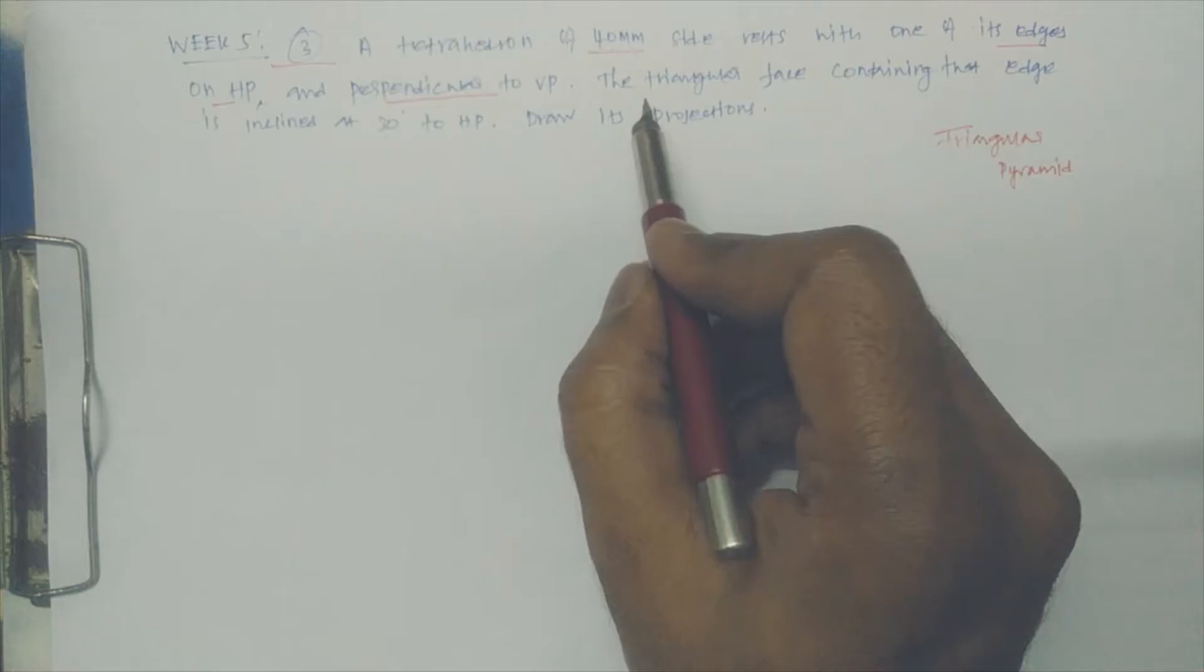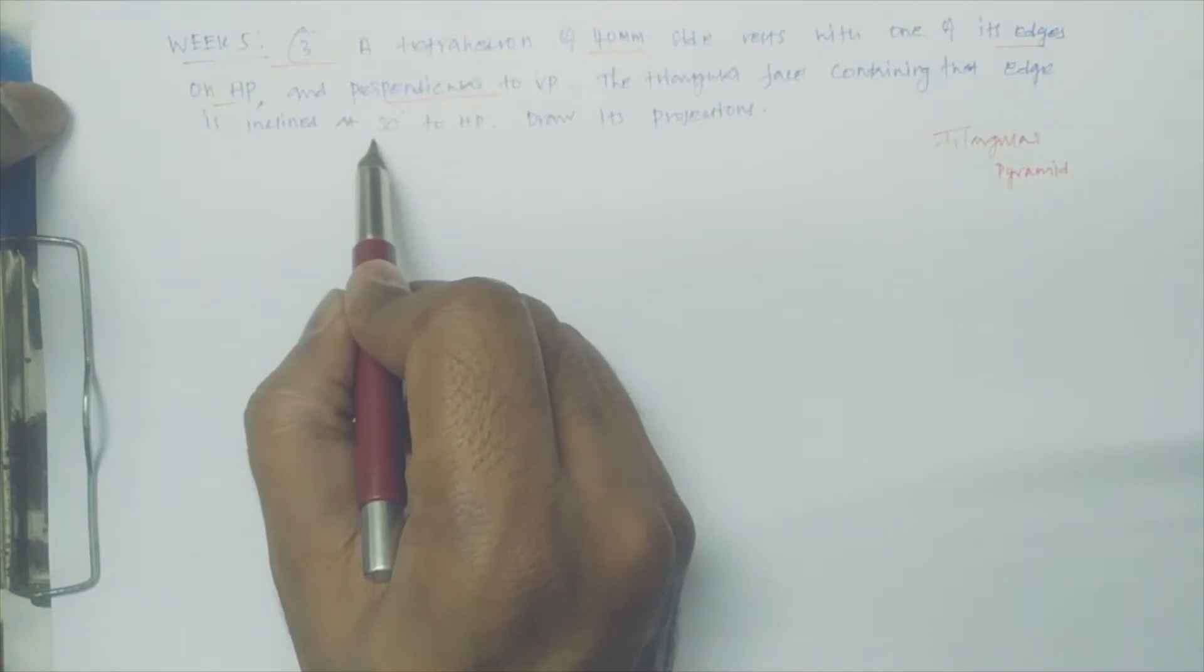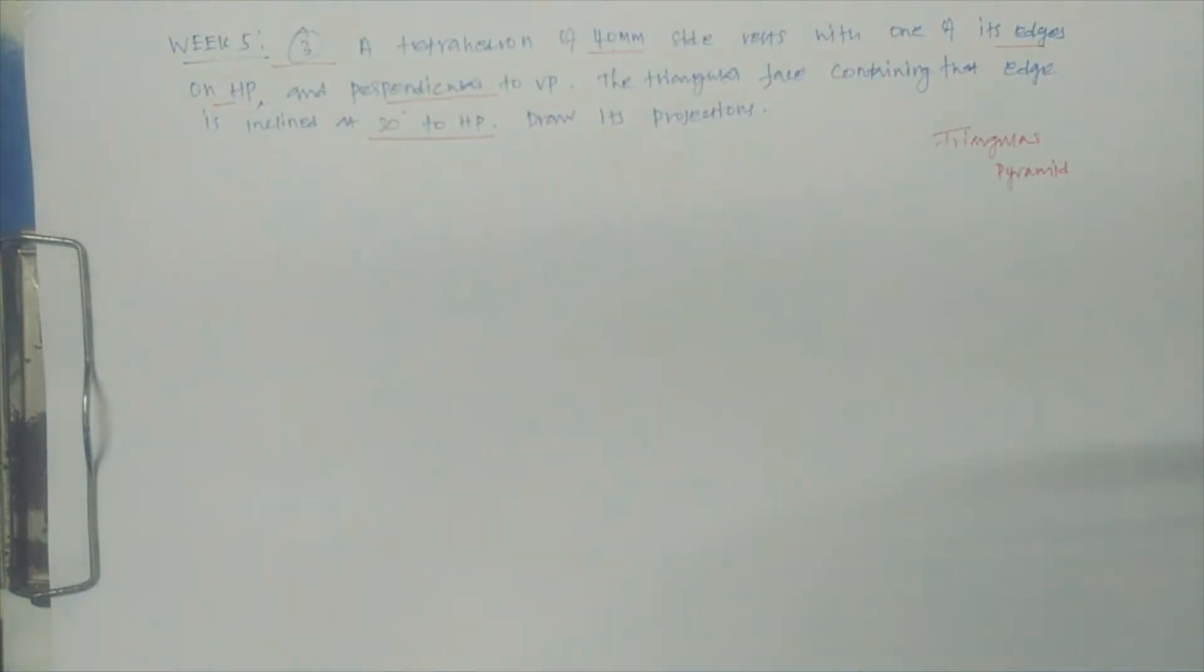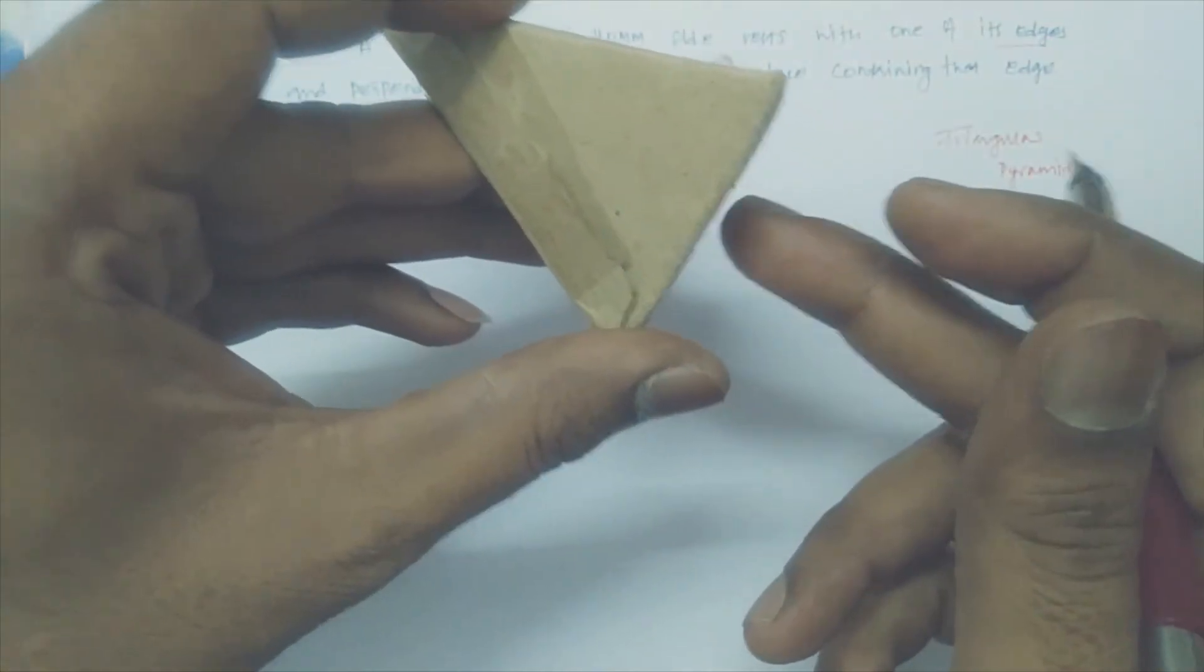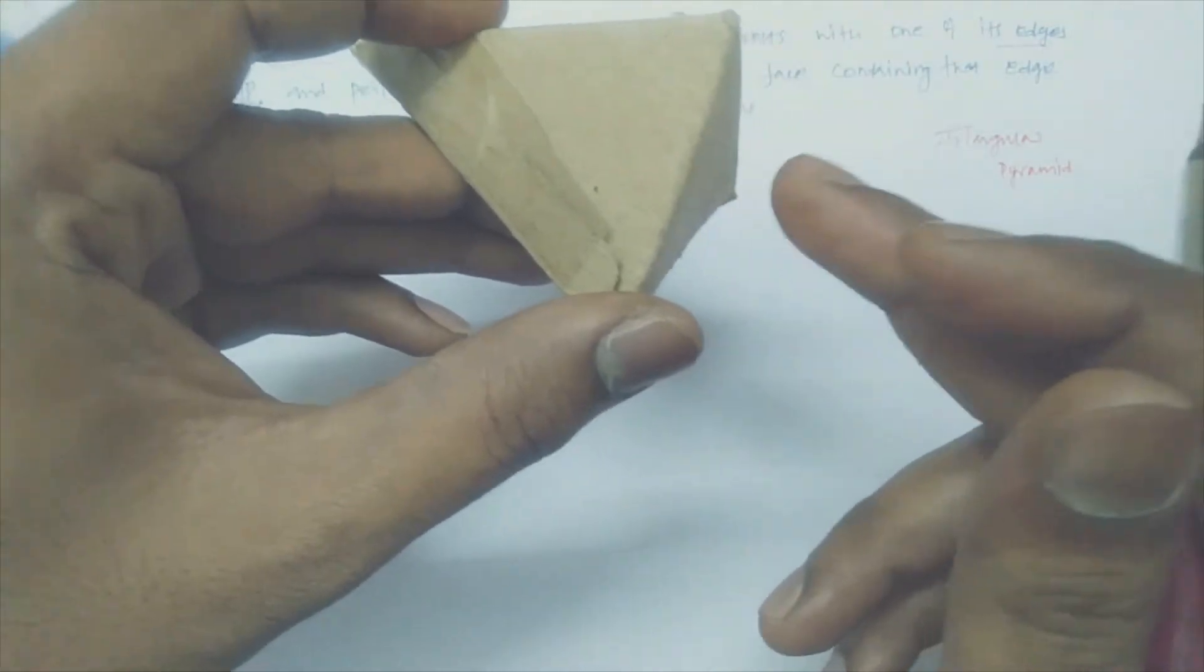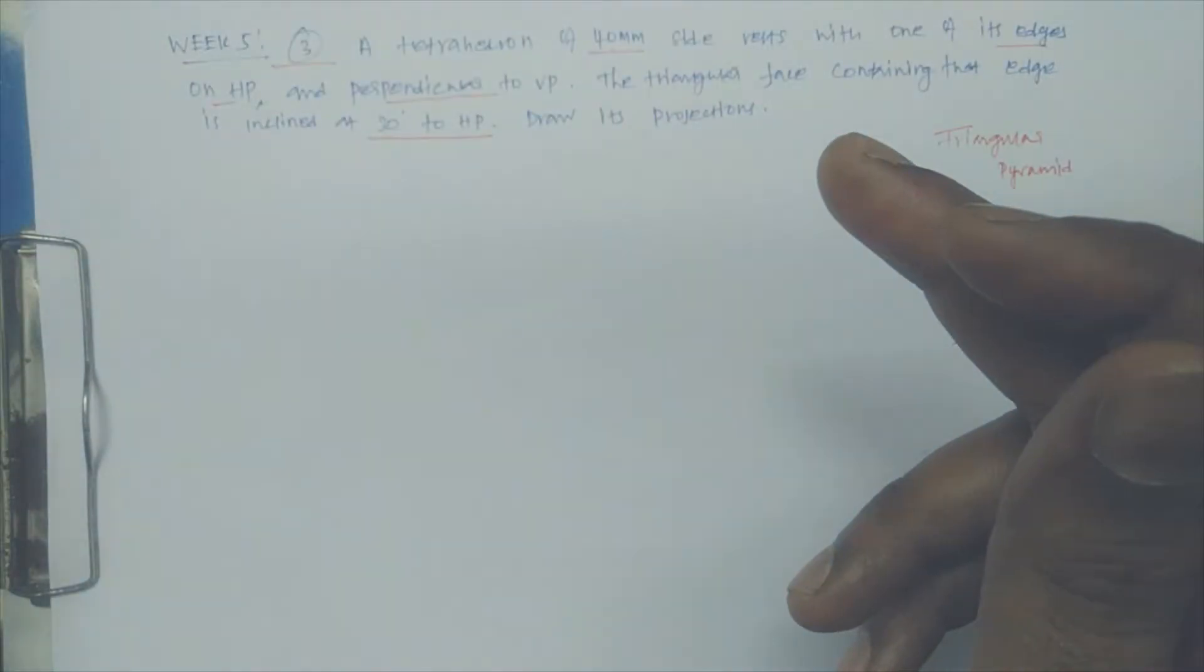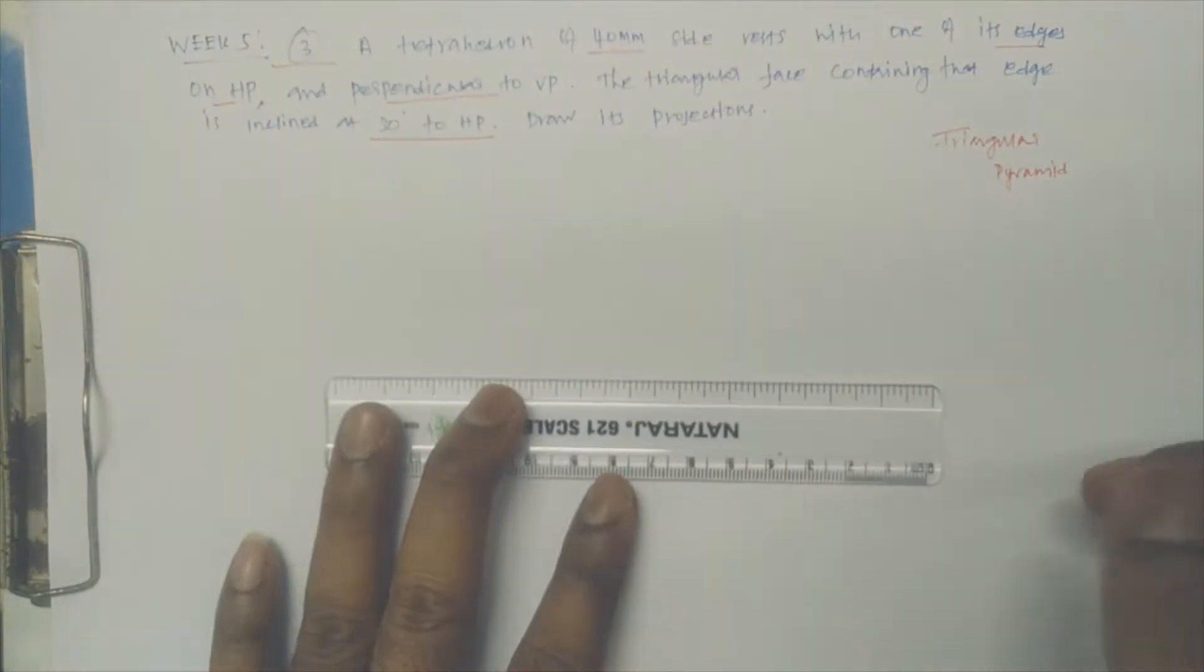Now the triangular face containing that edge is inclined at 30 degrees to HP. So the triangular face or base is 30 degrees to HP.